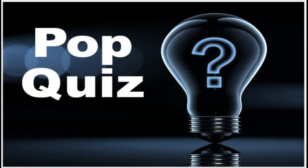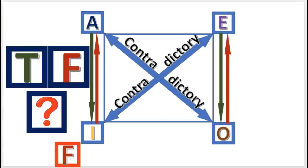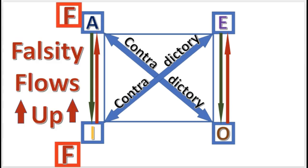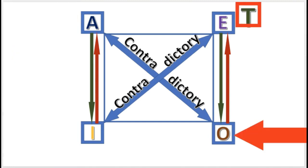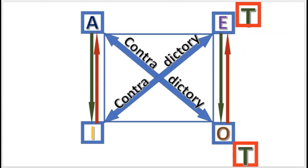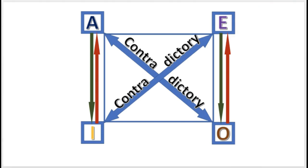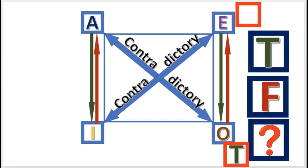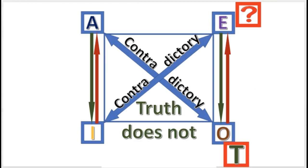Pop quiz: If I is false, what is A? The answer is: False, because falsity flows upward. Next practice problem: If E is true, what is O? The answer is: O is true — truth flows downward. Next practice problem: If O is true, what is E? The answer is: E is undetermined. Truth does not flow upward.